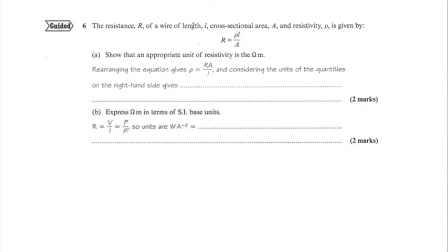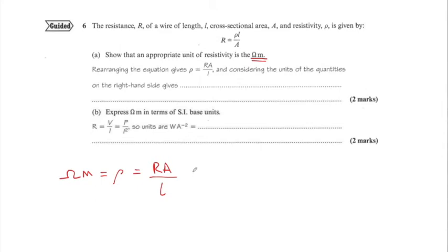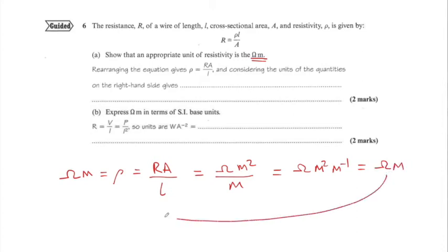The resistance R of a wire — we need to show that the ohm metre is the correct unit of resistivity. The formula for resistivity is rho equals R times A over L. The unit of resistance is the ohm, the unit of area is metres squared, and the unit of length is metres. Simplifying: ohms times metres squared divided by metres gives ohm·metres squared times M⁻¹, which equals ohm metres. QED — shown to be true.